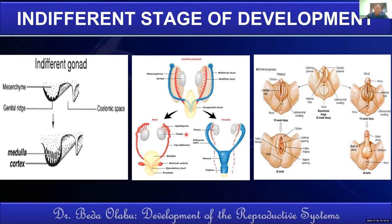The second type of indifferent stage is the indifferent stage of the internal genitalia, characterized by the presence of two embryonic genital ducts: the Müllerian ducts and the Wolffian ducts. The Wolffian duct is the duct of the mesonephros — the mesonephric duct. The Müllerian duct is parallel to the mesonephros, so we call it the paramesonephric duct. Importantly, the paramesonephric ducts are fused caudally but cranially they are paired, right and left.